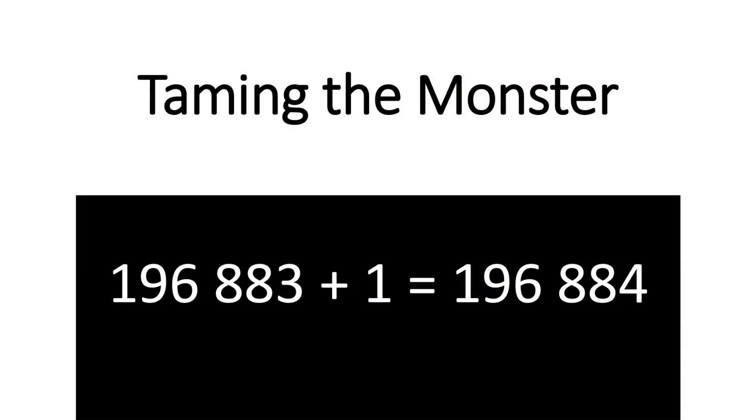Now, whilst all this was going on in group theory, mathematicians in a totally unrelated field were working on something called the J-function. A very important number associated with the J-function is 196,884. And when mathematicians noticed that these two numbers were almost the same, they thought it was just a coincidence. But this turns out not to be the case.